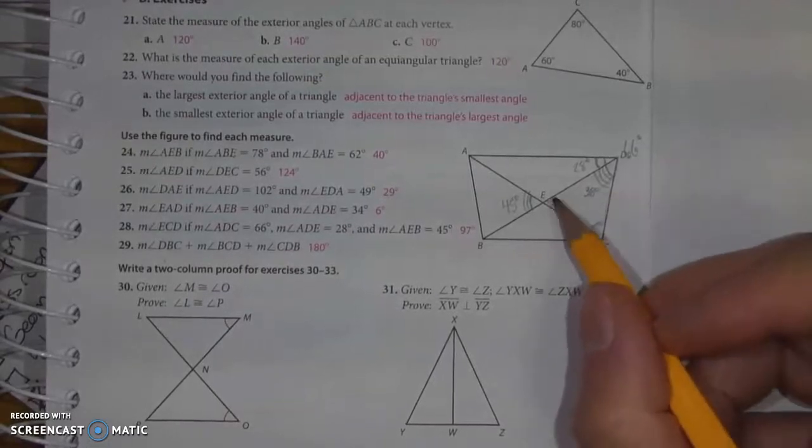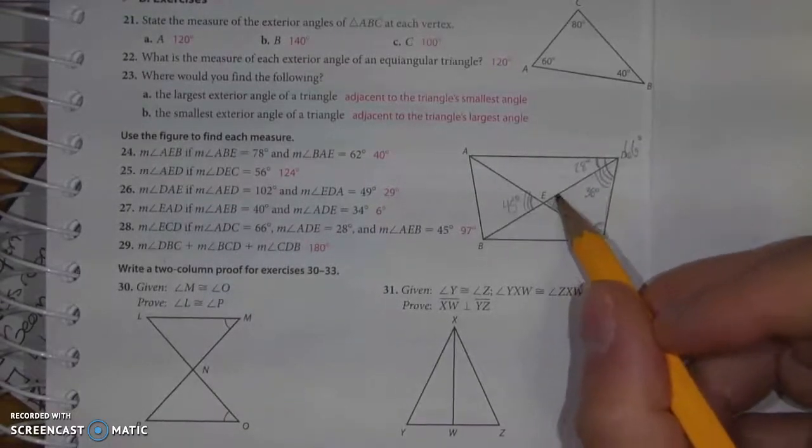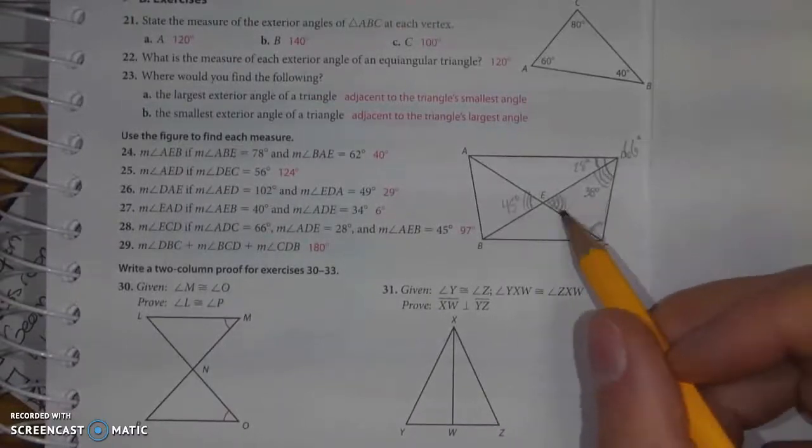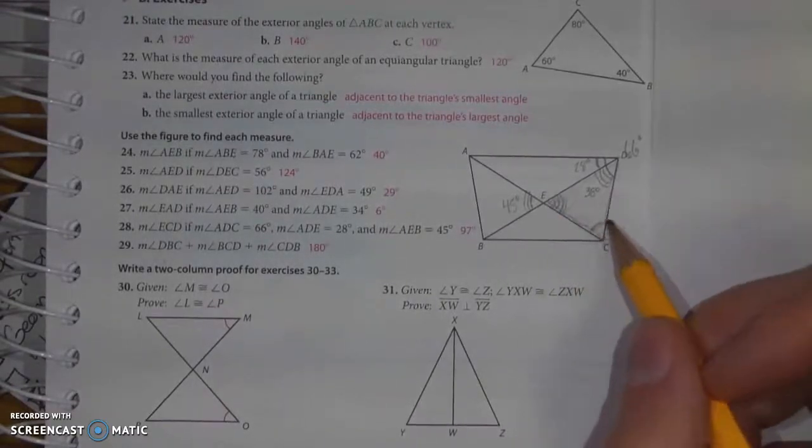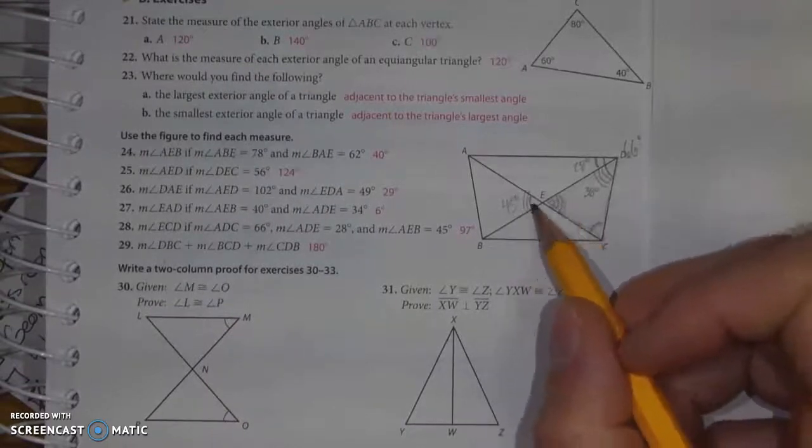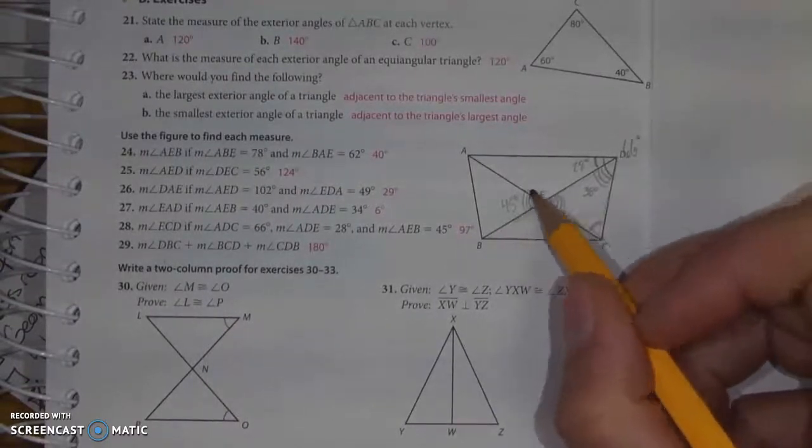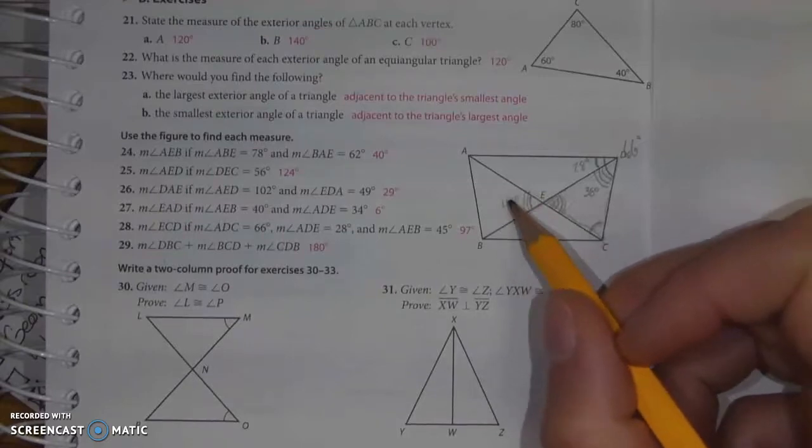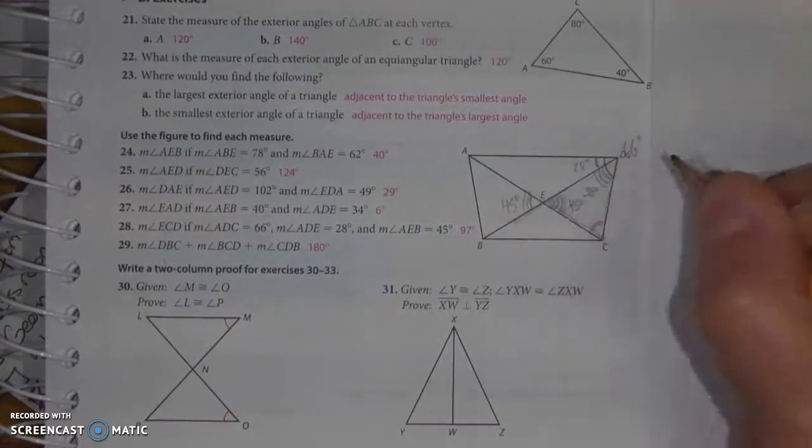When I look at that, that means the only angle I'm missing is this one right here to have two of the three angles in a triangle. And since this forms a vertical angle with the angle here, 45 degrees, this must also be 45 degrees.